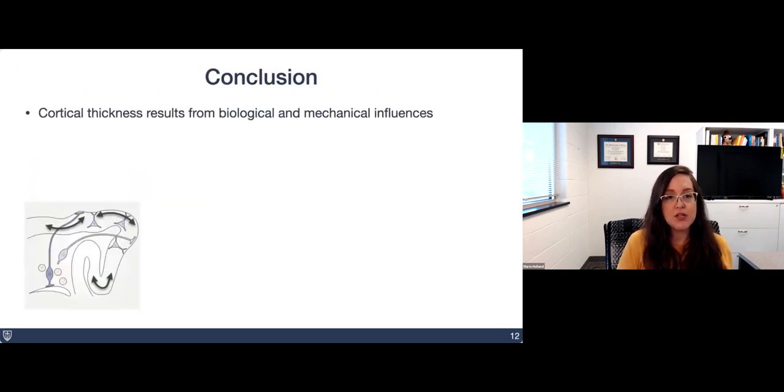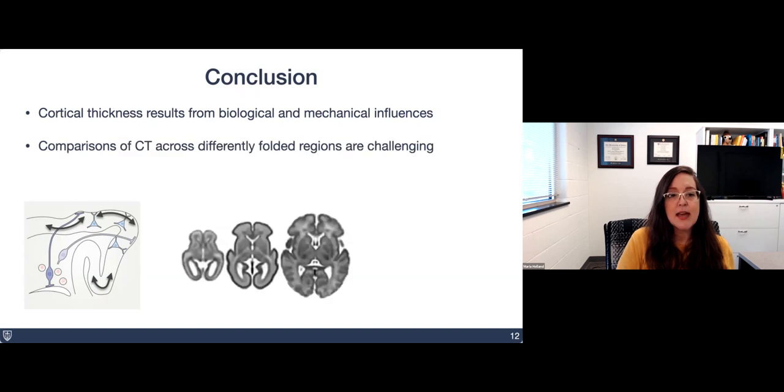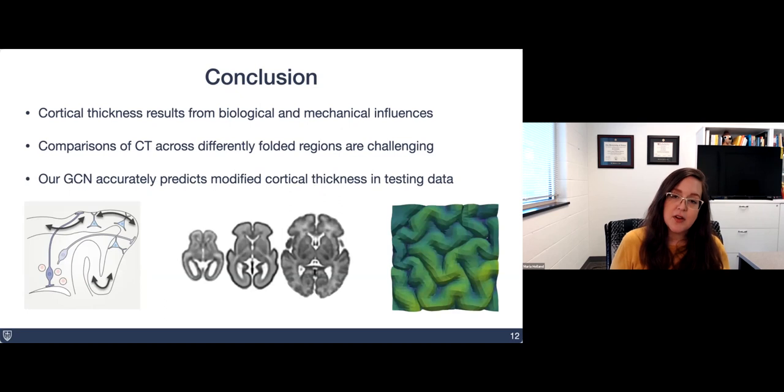So in conclusion, what I wanted to show you today is that cortical thickness results from a combination of biological and mechanical influences. This makes comparisons of cortical thickness across regions that are folded differently really challenging. But this graph convolutional network that we developed in response to this challenge is able so far to accurately predict the modified cortical thickness in our testing data.